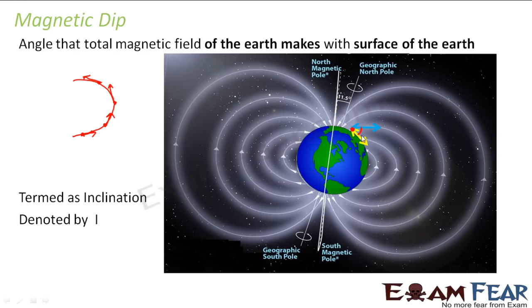The magnetic dip is the angle between the direction given by the magnetic needle with respect to the surface of the earth. In the previous case it was the direction given by the needle with respect to the true north-south direction — so these two are two different things. We need a three-dimensional description to define the magnetic field of the earth at any point, because the needle deviates both horizontally and vertically. Magnetic inclination tells us the location of the magnetic north and south pole with respect to the true poles. Magnetic dip tells us the direction of the magnetic field with respect to the surface of the earth.